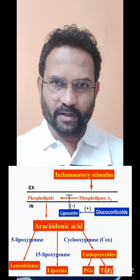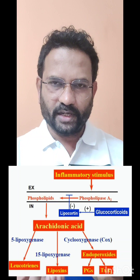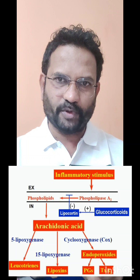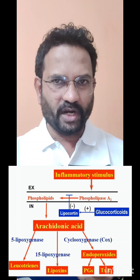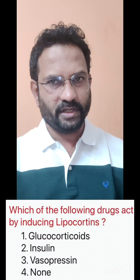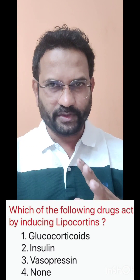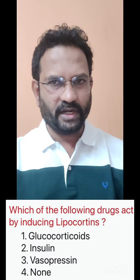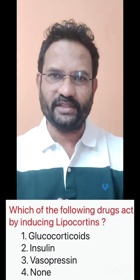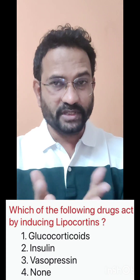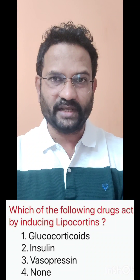Glucocorticoids act as anti-inflammatory agents by producing lipocortin. When a person takes glucocorticoids, lipocortin is produced, which inhibits Phospholipase A2. So prostaglandins and leukotrienes will not be synthesized. This is how glucocorticoids act.